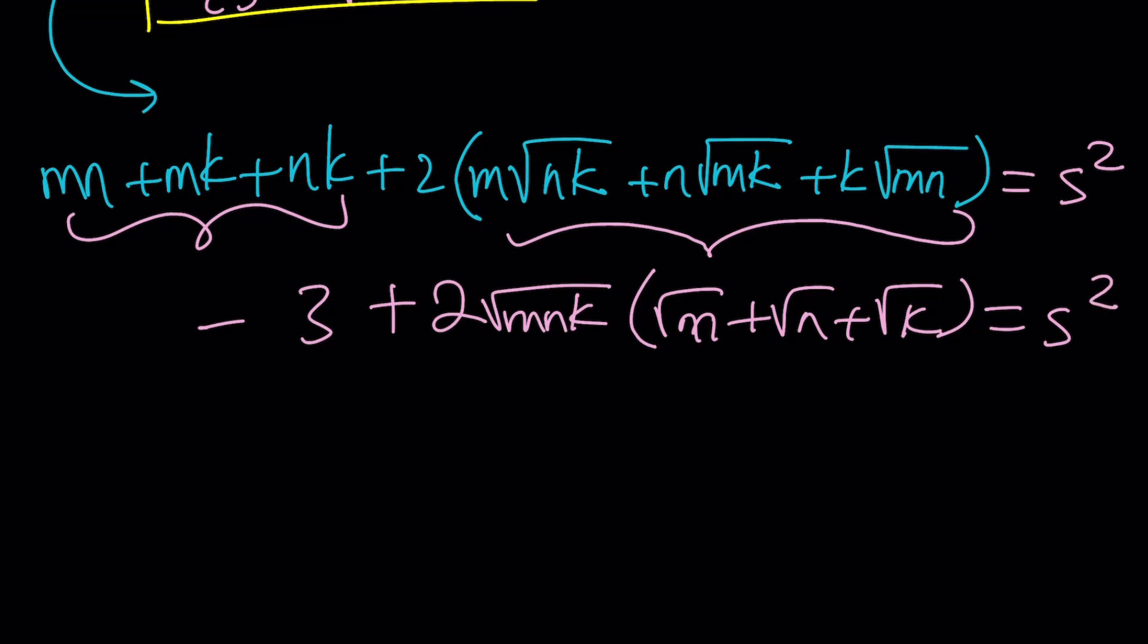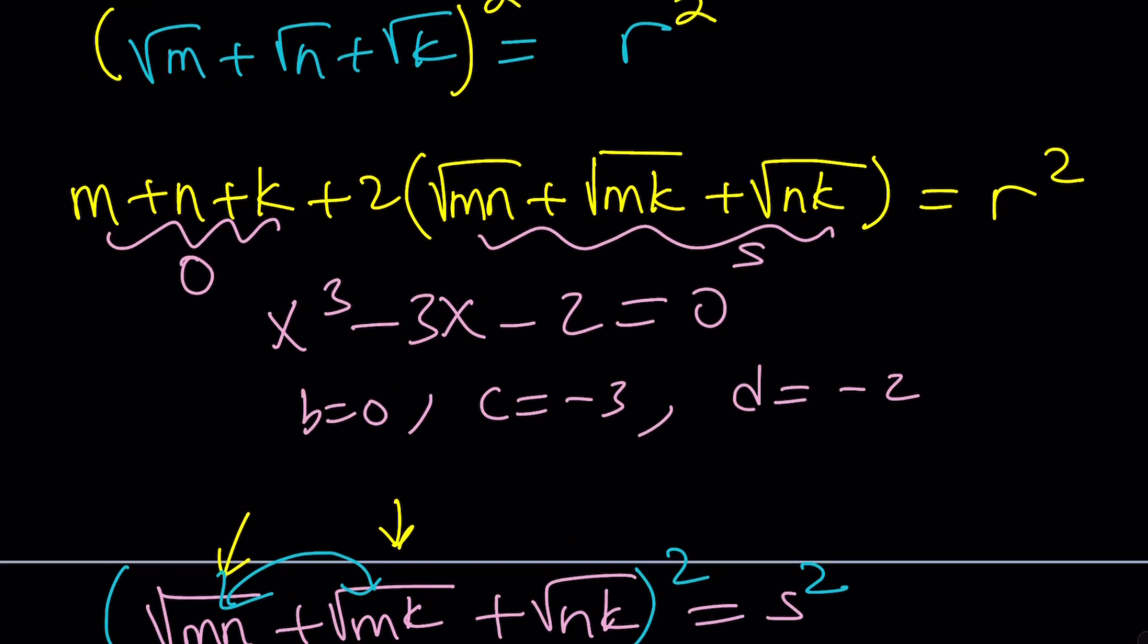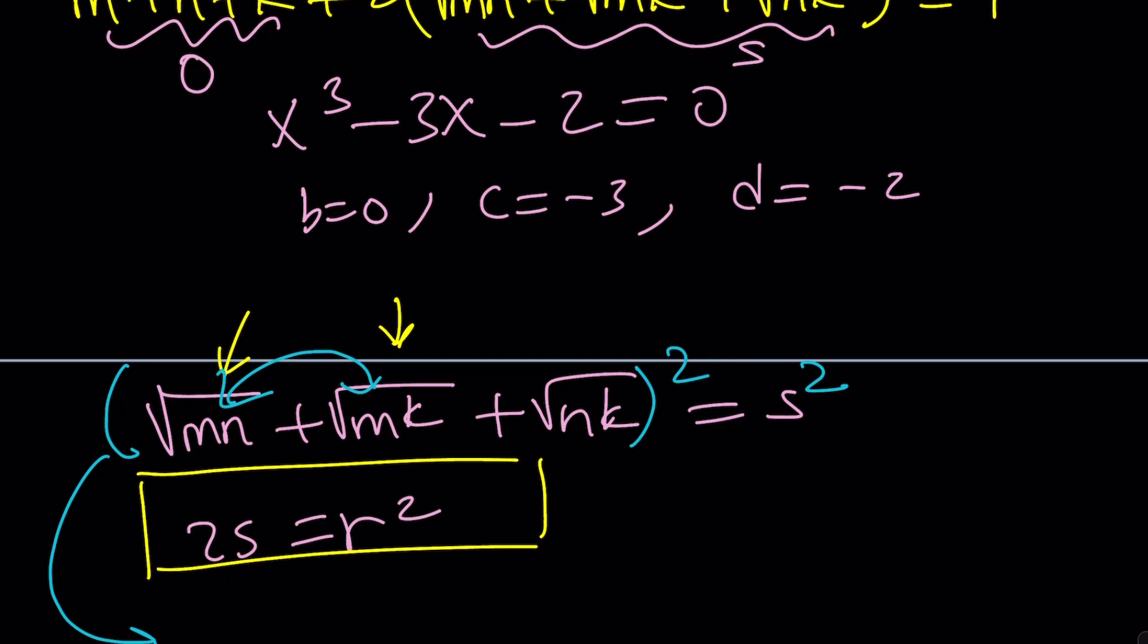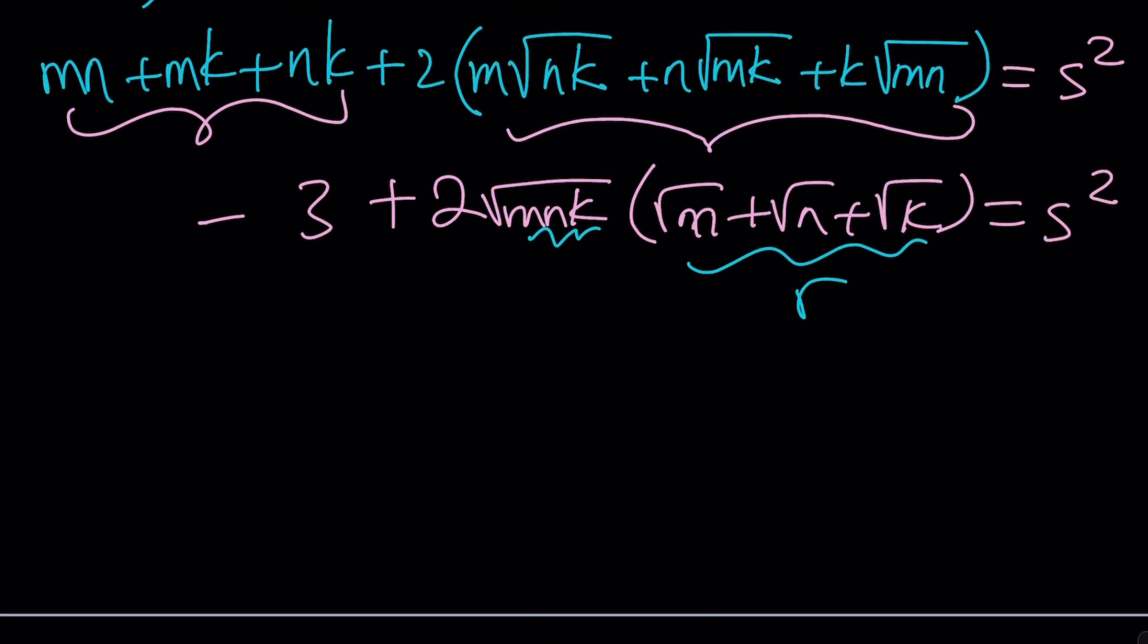Let's just remember that, because we're going to have to refer to s later on to find r. Now we do have an expression for this. Remember, it is a two-way product, which is c/a. And c is -3, so this equals -3. And this expression right here, we can find it because you can factor the square root of mnk. And inside you're going to find √m + √n + √k. So we get -3 here plus this equals s². But this is the same thing as r. And this is just a product, which is -d/a. d is -2, so this is going to be √2.